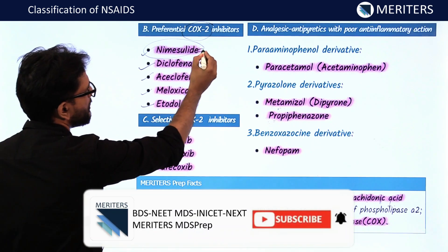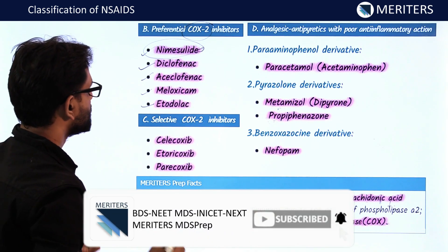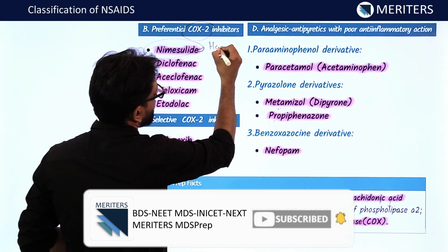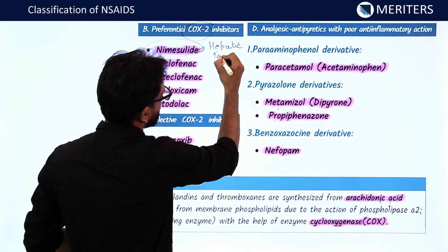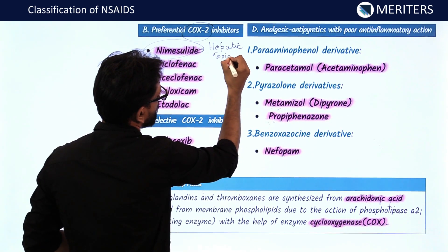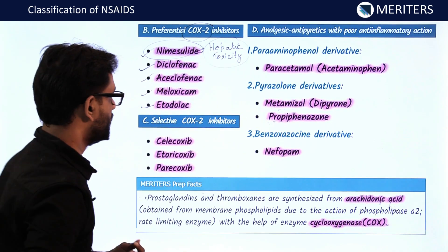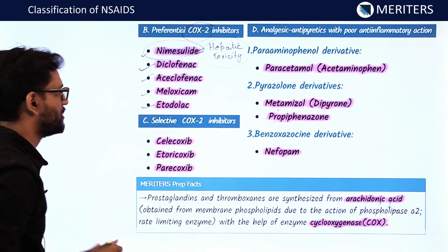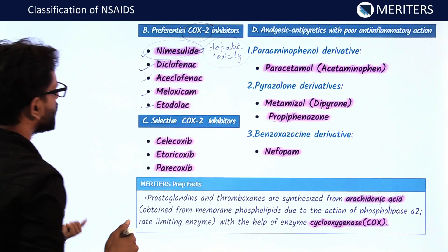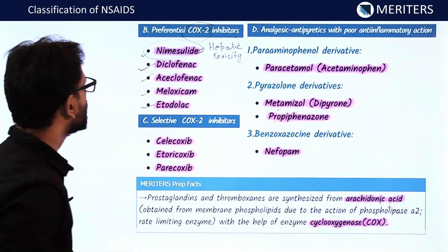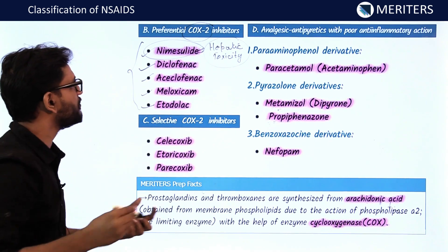Nimesulide has significant hepatic toxicity when given in large amounts and can cause liver problems. As a result, it has been banned in several countries. Diclofenac and aceclofenac are still in use.